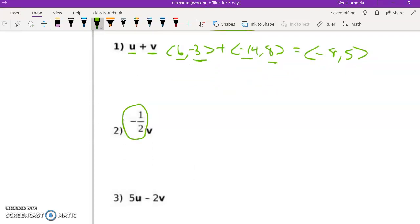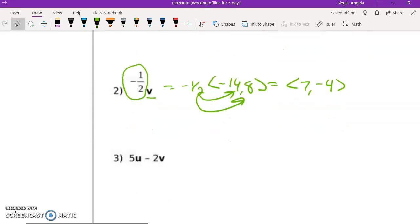So I'm going to take half of this vector. So let me write that out. Sorry, it's negative one. So I'm just going to take half of negative 14 or negative one half of negative 14 and negative one half of eight. Okay, so go ahead and try this one. Then we'll be done with this video.